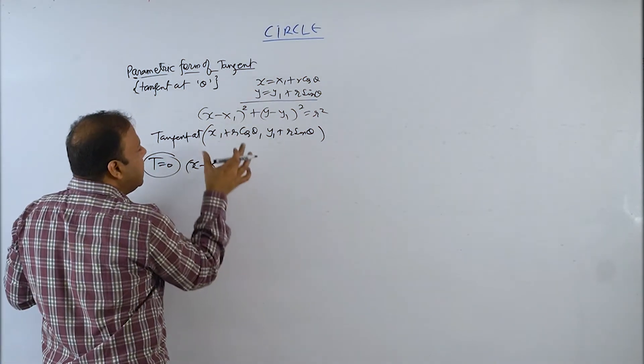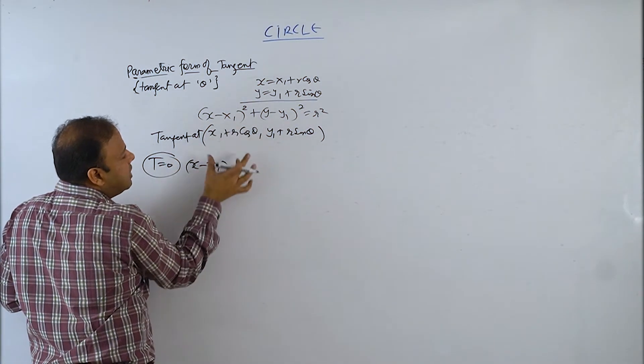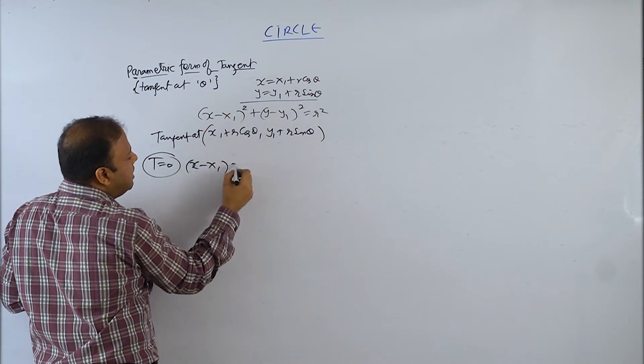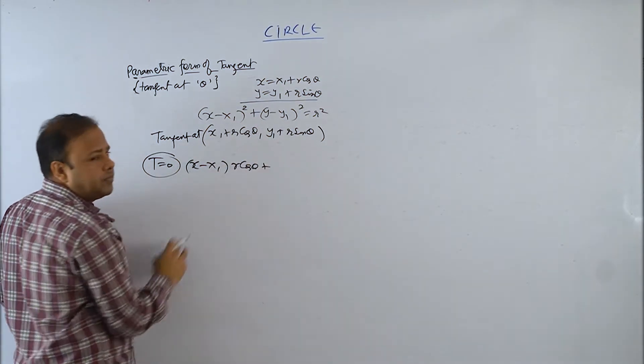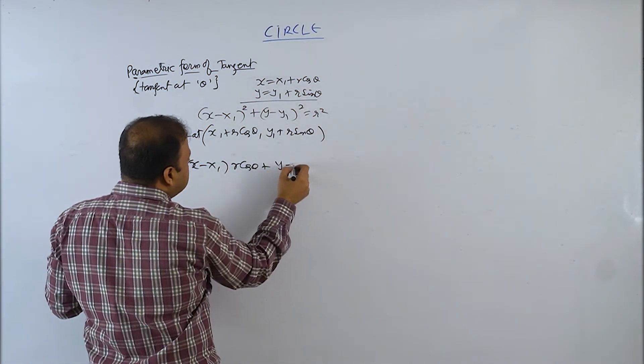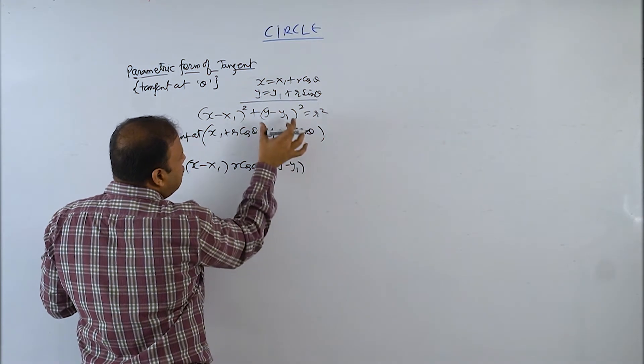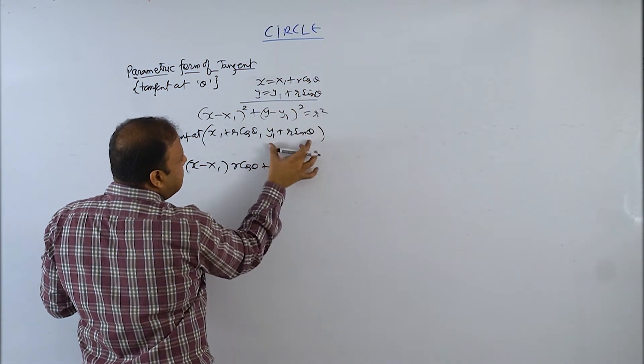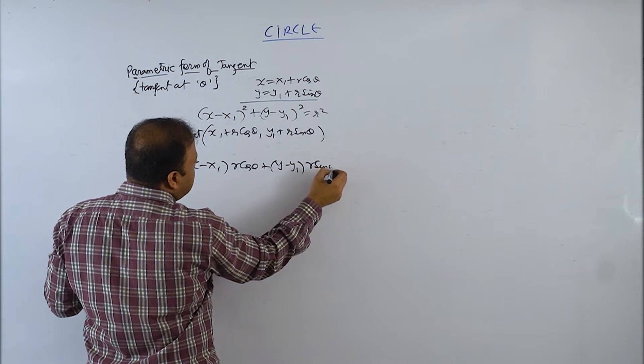x minus x1 into this minus x1, which will be r cos theta, and y minus y1 into this minus y1, which is r sin theta.